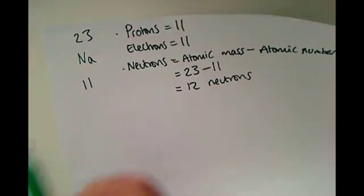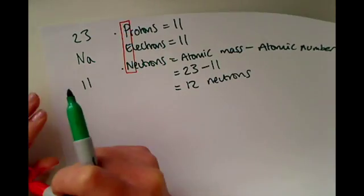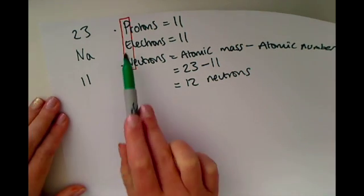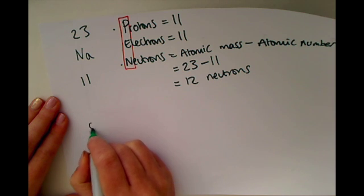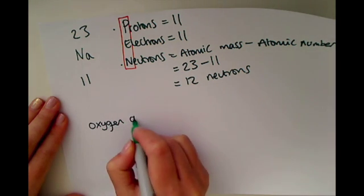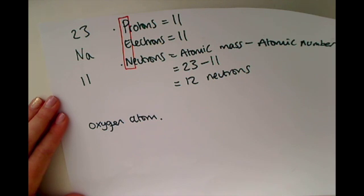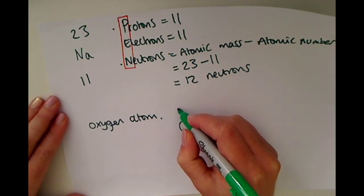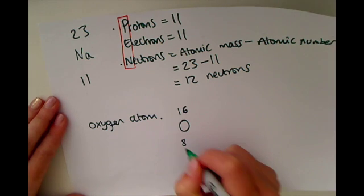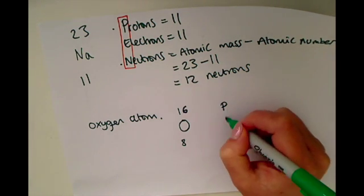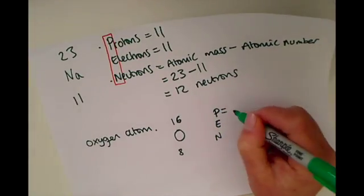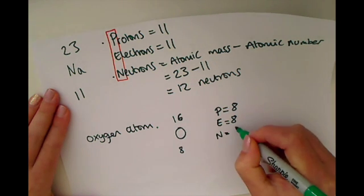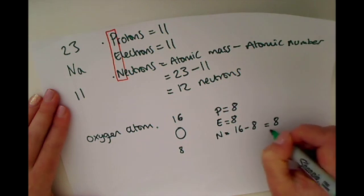Sometimes we call this a PEN number — protons, electrons, and neutrons — just to help us work them out. Now pause this video and have a go at working out the number of protons, electrons, and neutrons in an oxygen atom. Oxygen has a mass number of 16 and a proton number of 8, so it has 8 protons, 8 electrons, and to work out the neutrons we do 16 minus 8, which gives 8 neutrons.